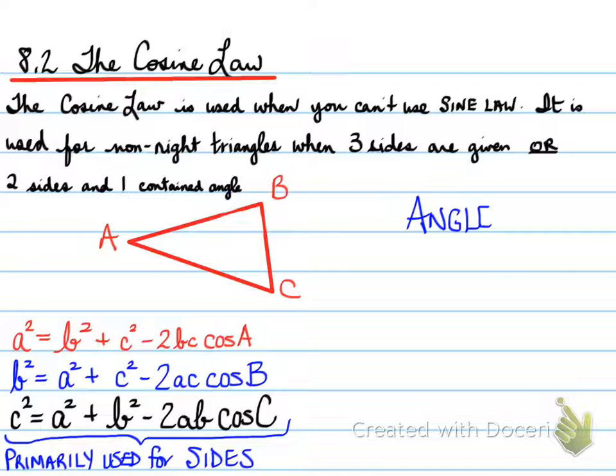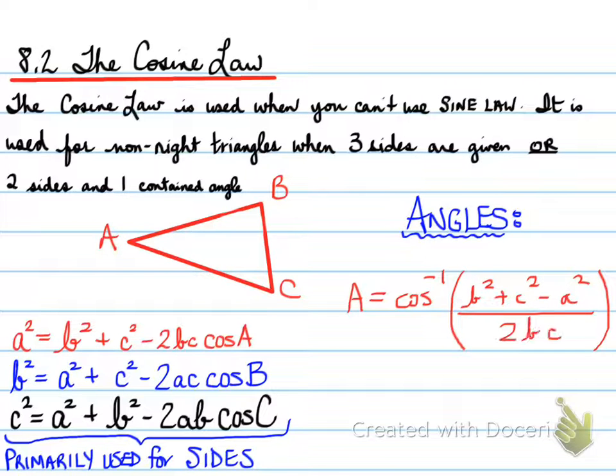And you can use it to find an angle, but what I find is that it's better to have an angle formula where it's already been isolated. Your book may actually talk about the formula in a different way. But with respect to this, what we need to do is understand that angle A is equal to the cos inverse of B squared plus C squared minus A squared all over 2BC.